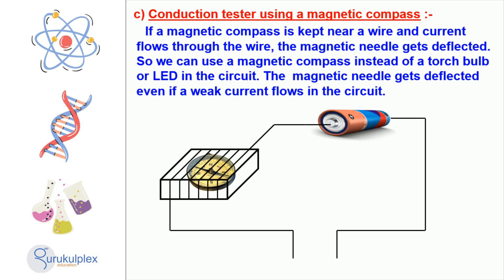When an electric current runs through the wire, the needle of the compass will move, indicating the presence of an electric current, and it can even help in measuring the current. This experiment is great for teaching children about the power of electricity.